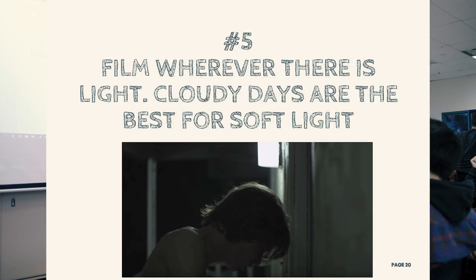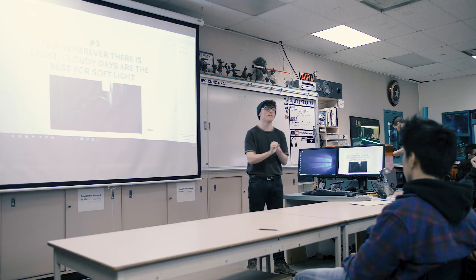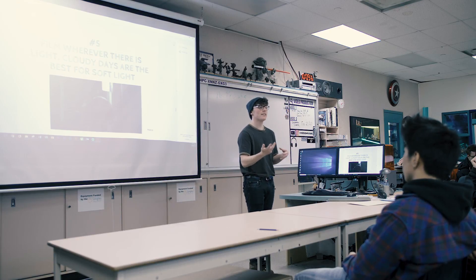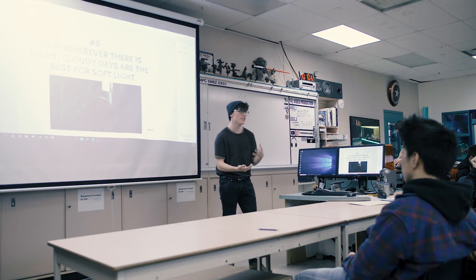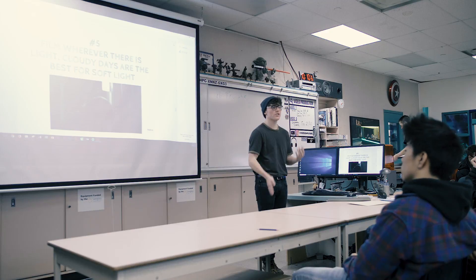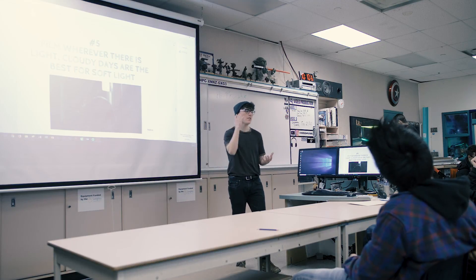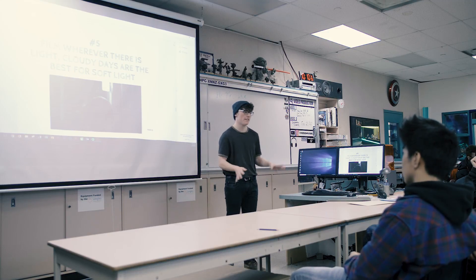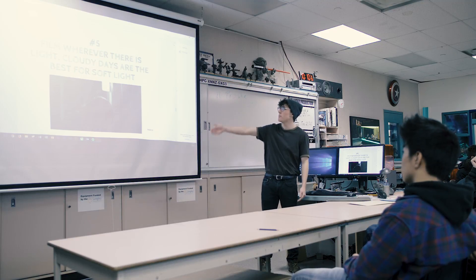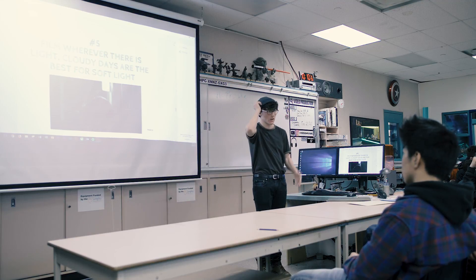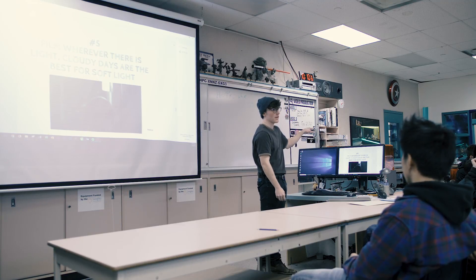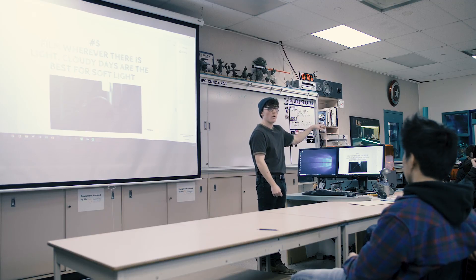Number five. Film wherever there is light. Cloudy days are the best for soft light. Whenever I shoot outside for photography or even film, cloudy days are generally the best because you get soft light. It's kind of edgy with the rain, but that's good. And sunny days is good too, except as beginners, you guys won't know which way to shoot or how the sun should hit your actor. So I would just recommend shooting on cloudy days or at night where there is actual light. Like you can see in this scene, they're shooting right below a light, which is very smart. So if you find the light, just shoot wherever there is light. Work with the light. If you're shooting down the hallway, which by the way I don't recommend, find the brightest hallway there is.